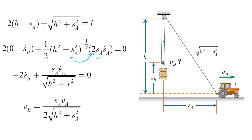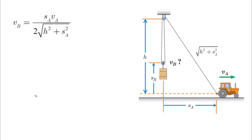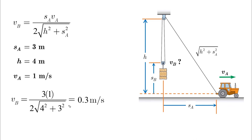Setting ṡB equal to vB and ṡA equal to vA, we get the relationship between vB and vA. With the given numbers — if vA equals +1 m/s to the right — we find vB equals +0.3 m/s, which is upward. This makes sense: A moves right (positive) and B moves up (positive).